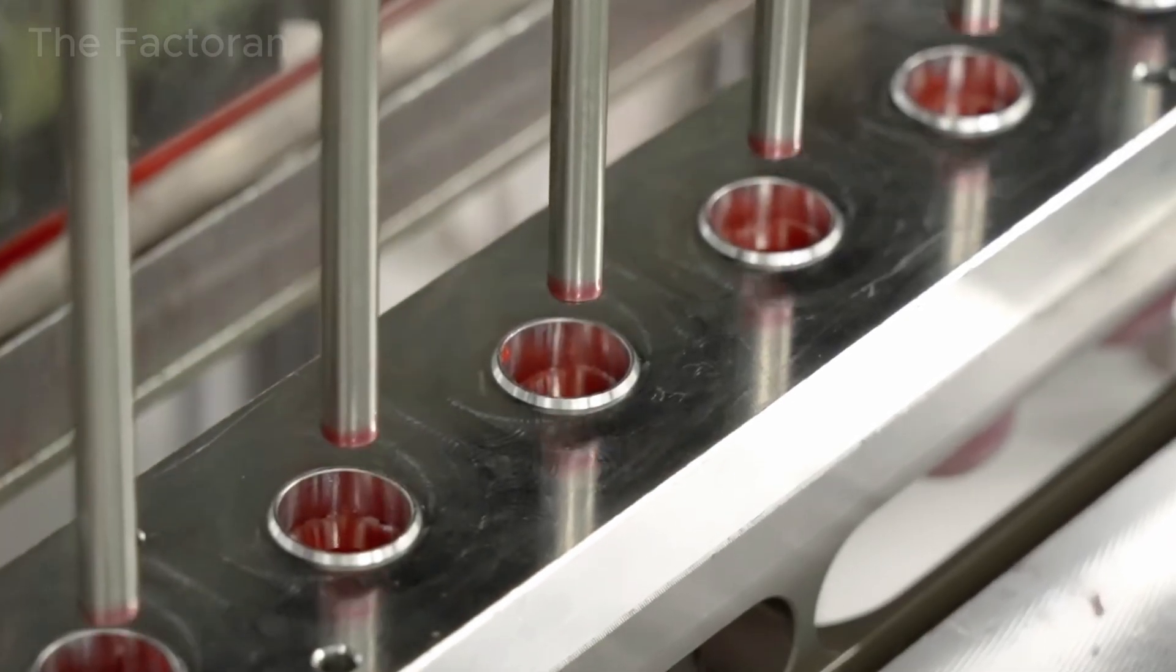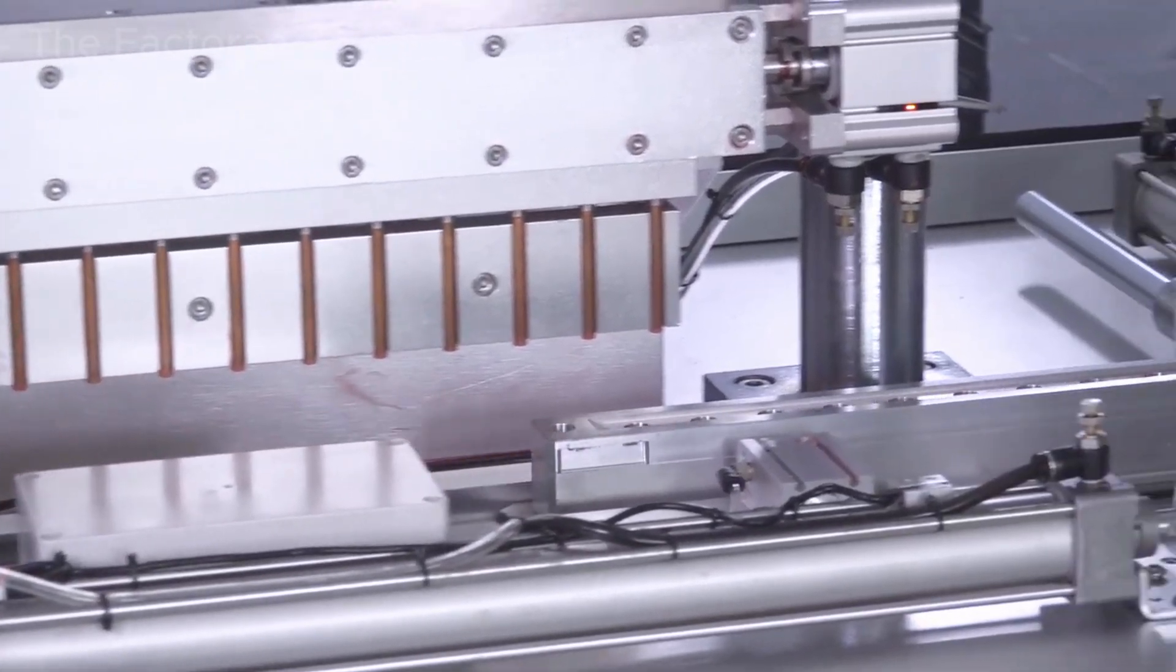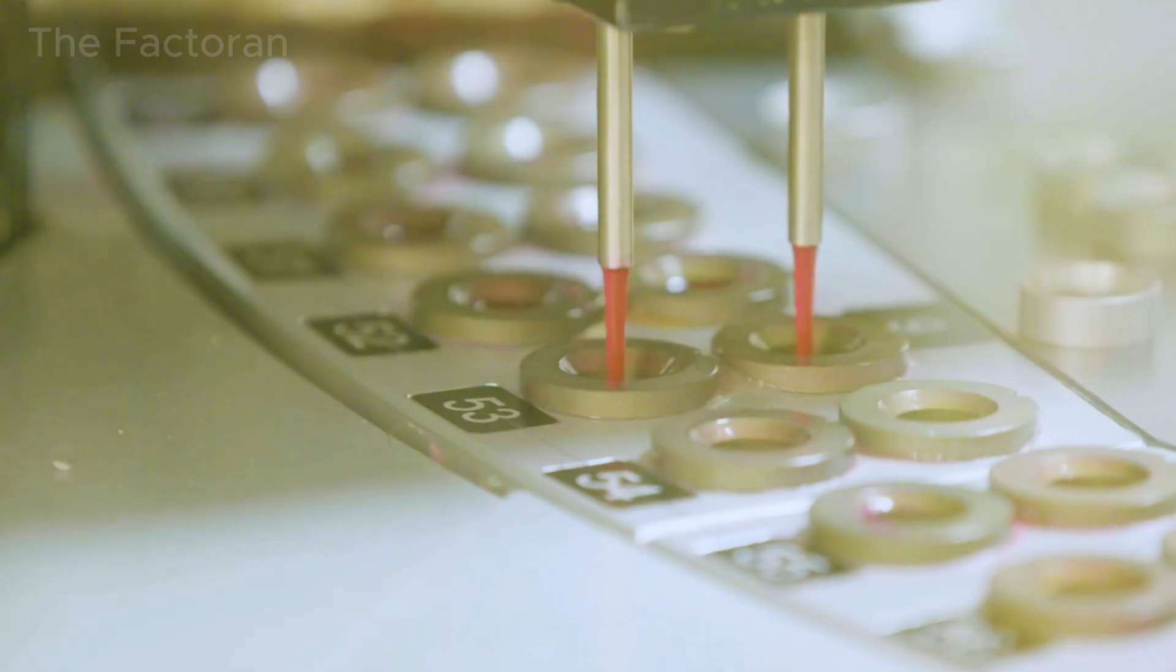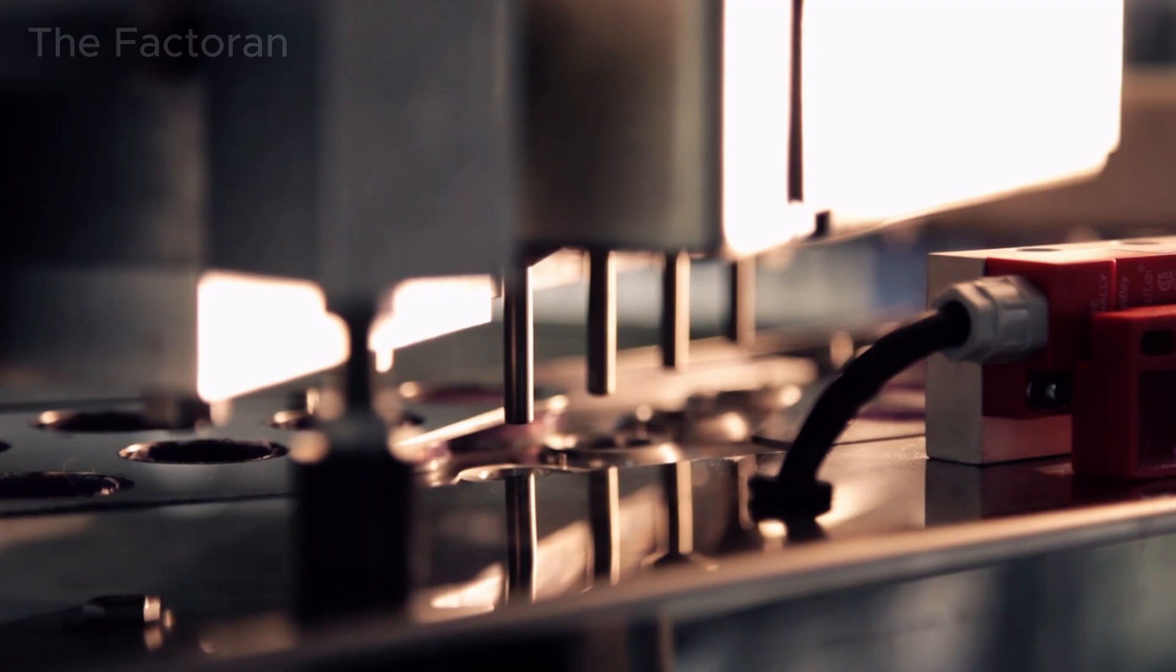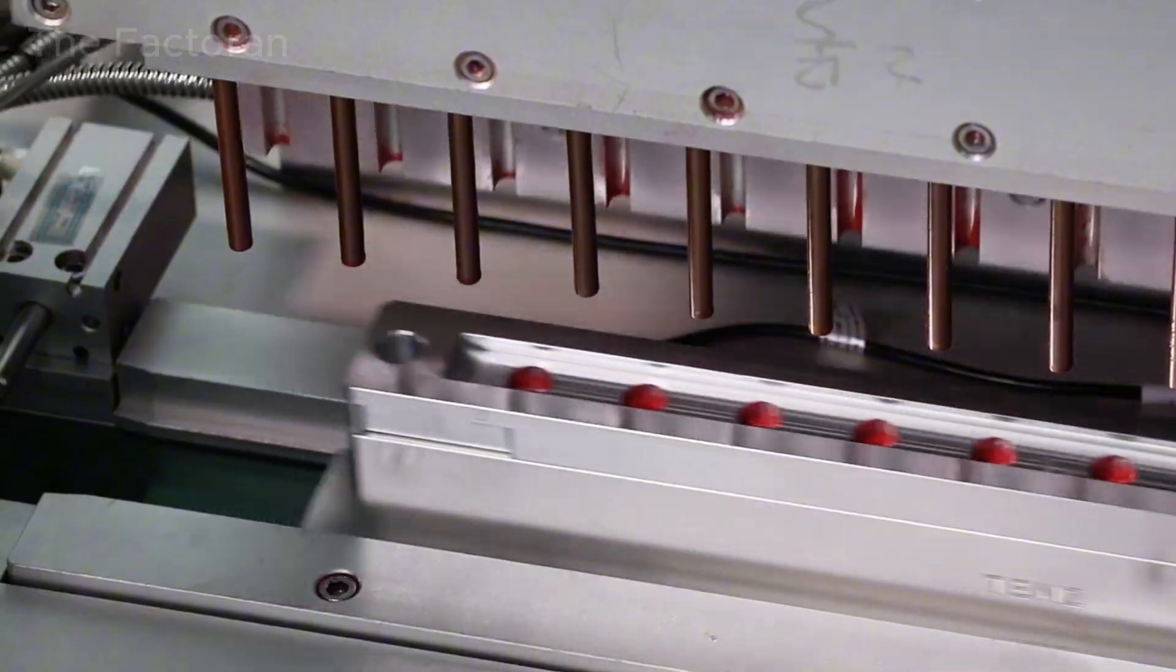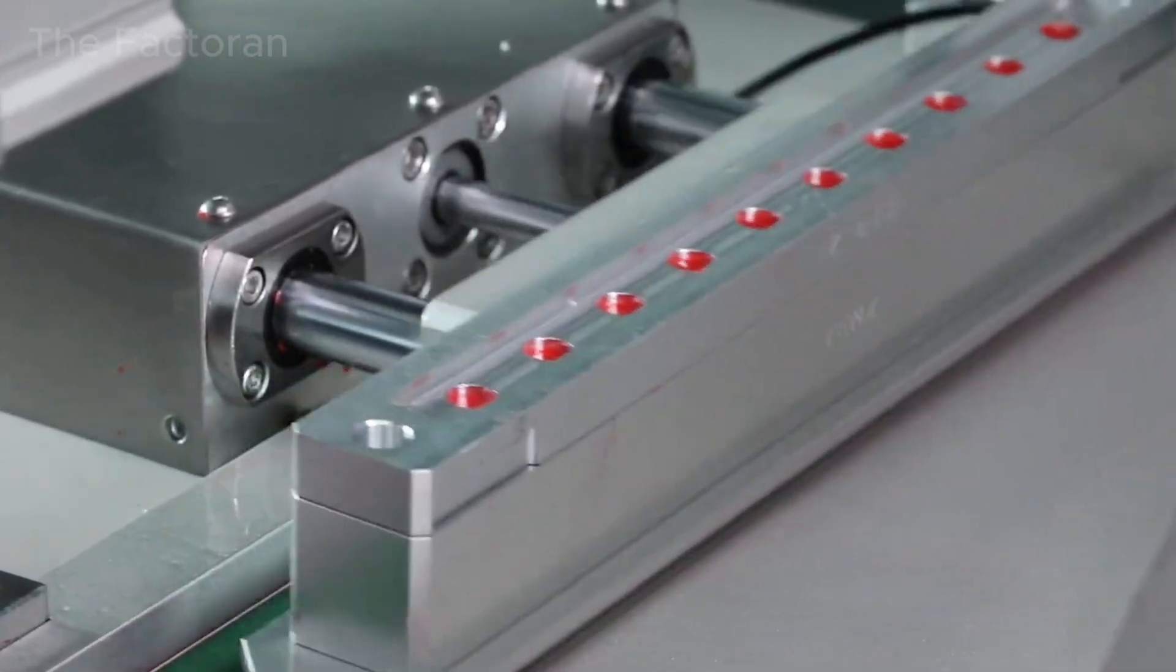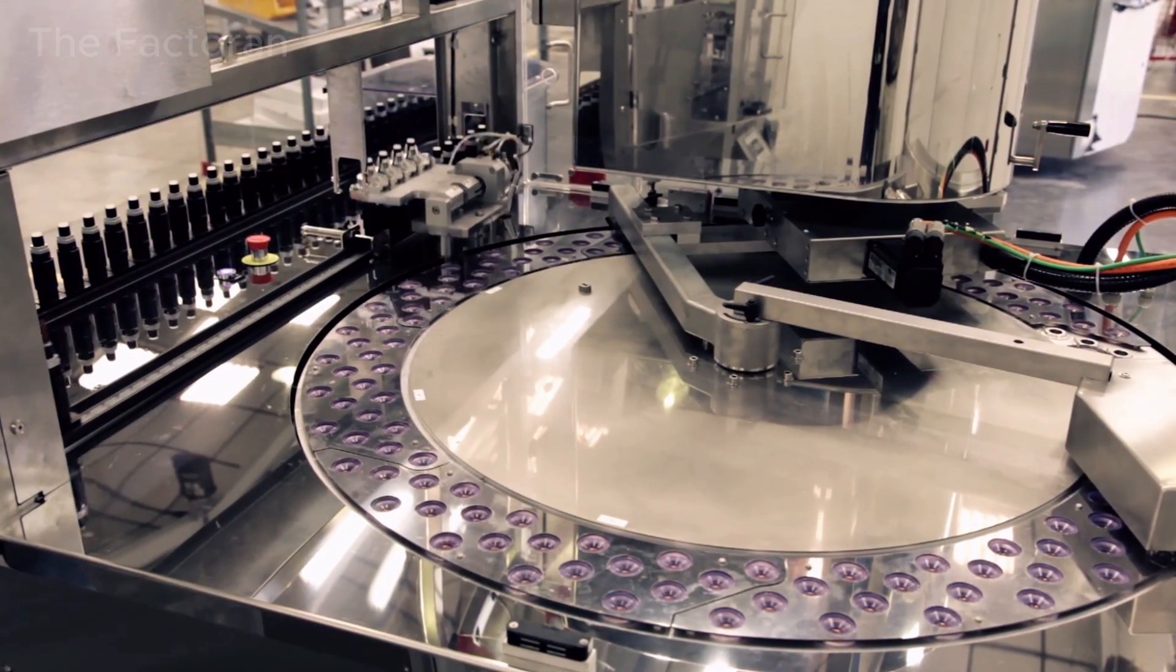An automated lifting system raises each mold into precise alignment with the dispensing nozzles. Once activated, the hot lipstick mixture is pumped evenly into each mold cavity, with every cavity corresponding to a single lipstick stick. This process must remain stable and uninterrupted. If the flow becomes uneven, the lipstick can solidify in layers, resulting in a non-uniform internal structure. Each mold is capable of producing dozens of lipsticks simultaneously, significantly increasing overall production efficiency.